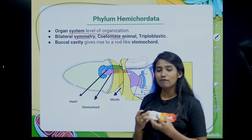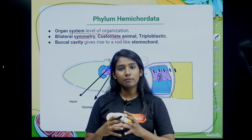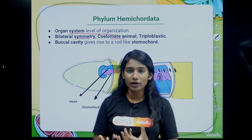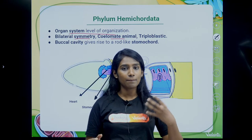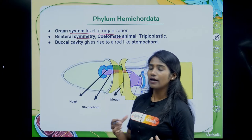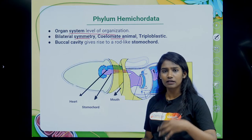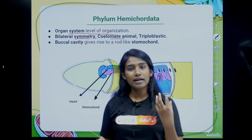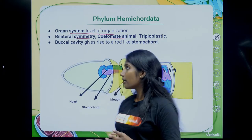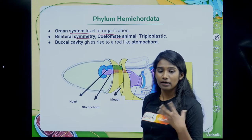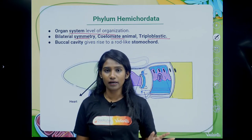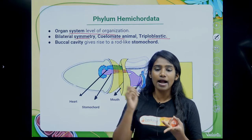Hemichordata is coelomate, meaning they have a body cavity. Their germ layer is triploblastic — meaning the germ layer has ectoderm, endoderm, and mesoderm. A coelom is the body cavity. Animals with a body cavity are coelomate; animals with a false body cavity are pseudocoelomate; and animals without any body cavity are acoelomate. Hemichordata is coelomate and triploblastic.